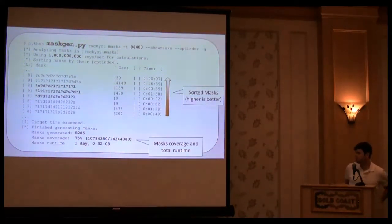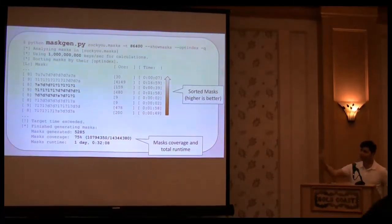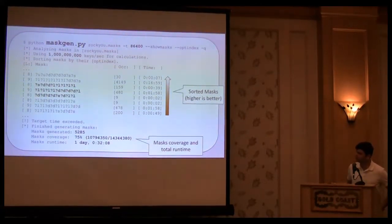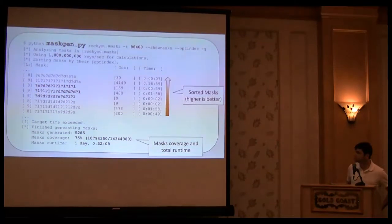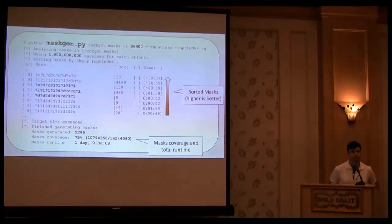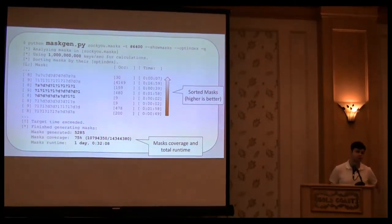Here's some interesting masks that are covered. Notice the very first highlighted one. Even though its coverage is only 159 passwords, because it's executing in only 39 seconds, that mask will be given higher priority as opposed to a mask which has higher coverage, but takes two minutes to run. At the same time, the third highlighted mask, while it only executes in two seconds, because coverage is so low, it will be rated lower. It's a nice way to sort masks based on their efficiency, not just complexity or occurrence.